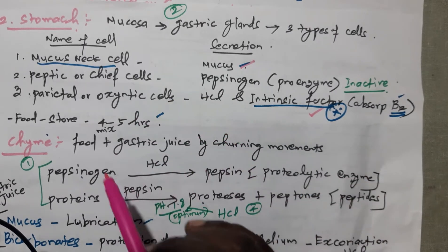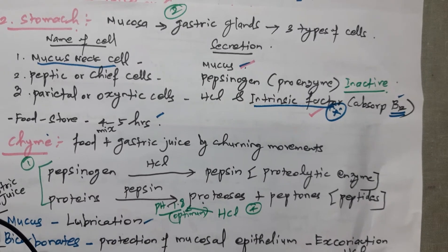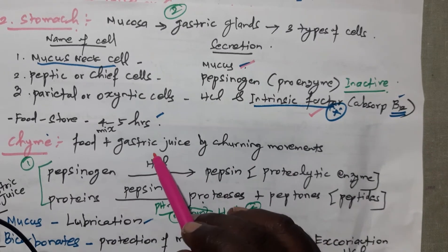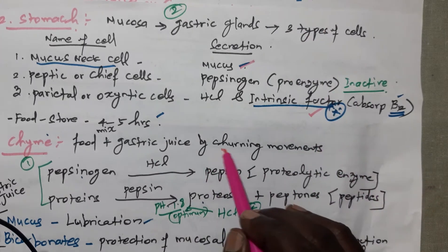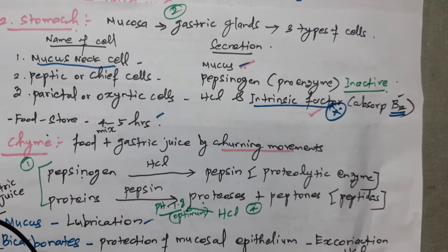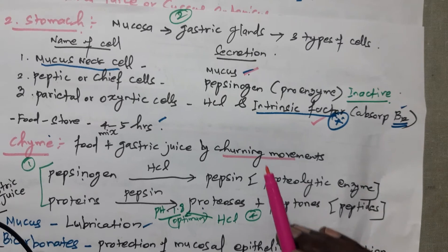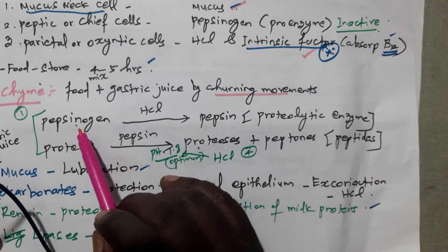In the stomach, food material is stored for four to five hours. Another term is chyme — chyme means the food is mixed thoroughly with the gastric juice secreted by the gastric glands through churning movements. That is called chyme. In the gastric juice secreted by gastric glands, some enzymes are present.